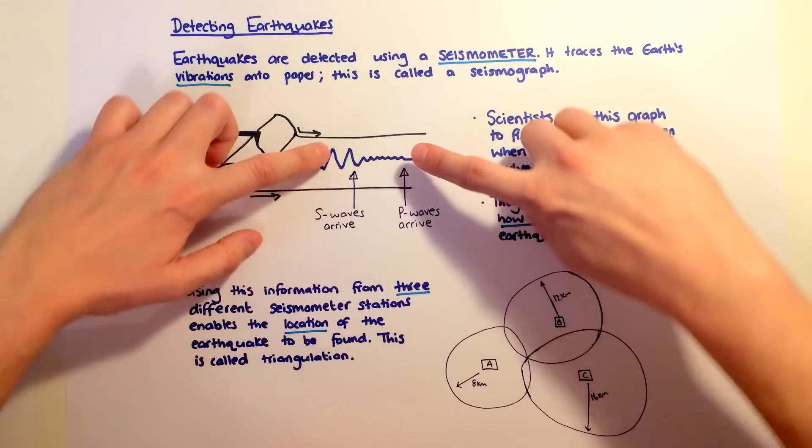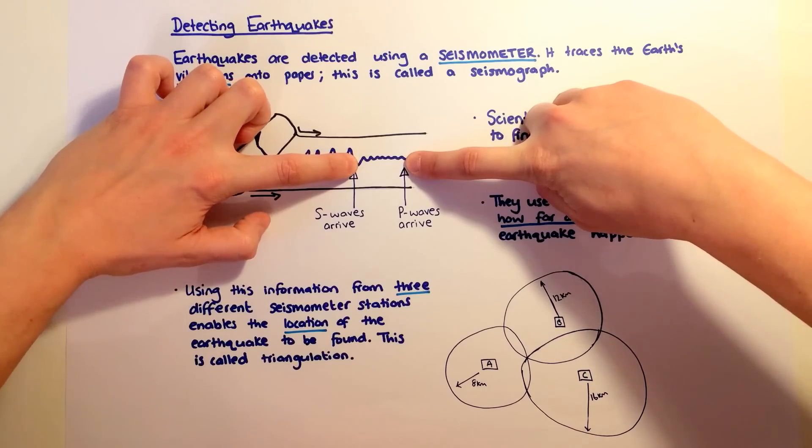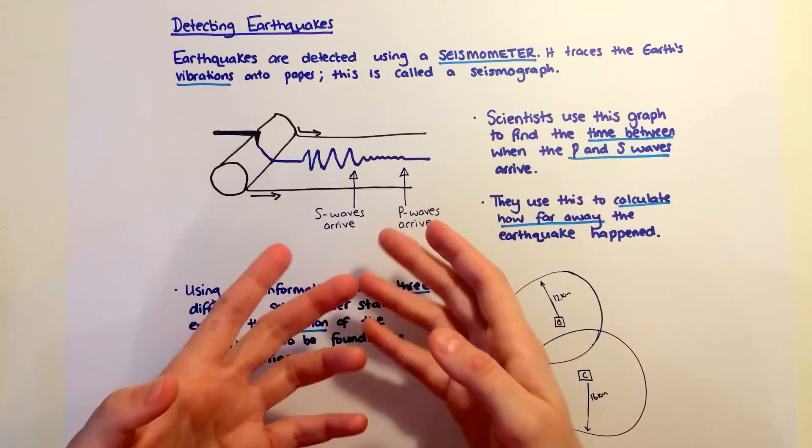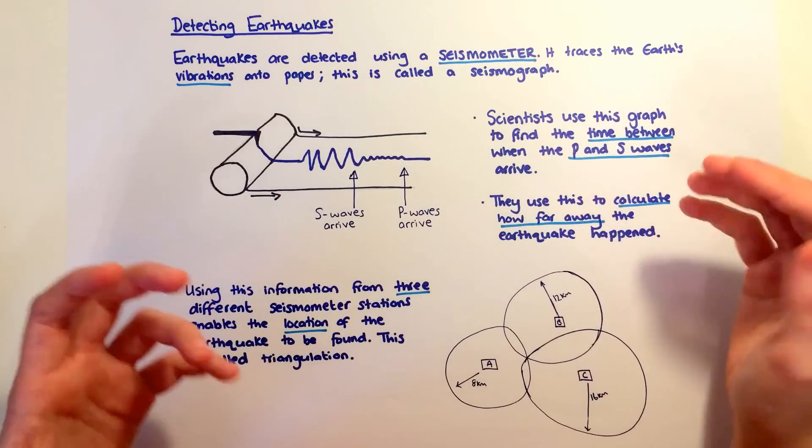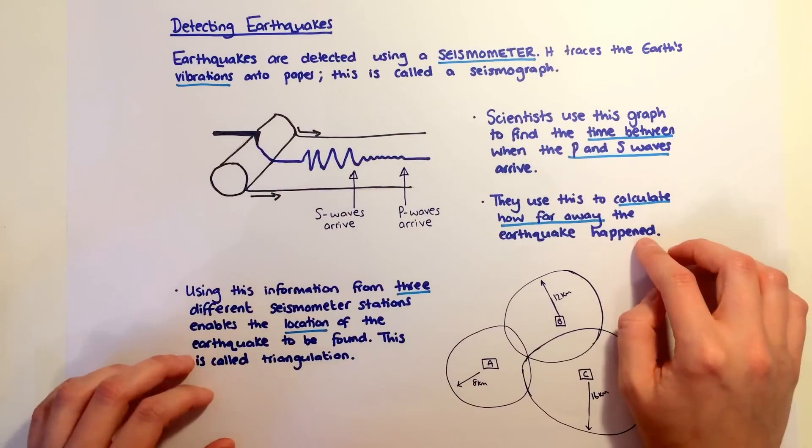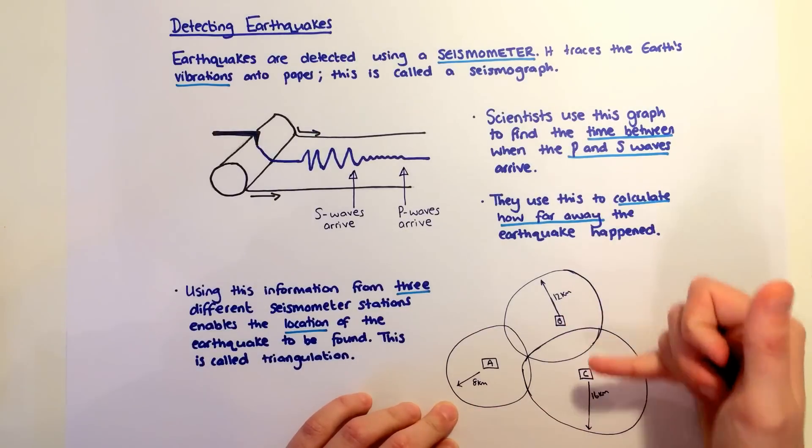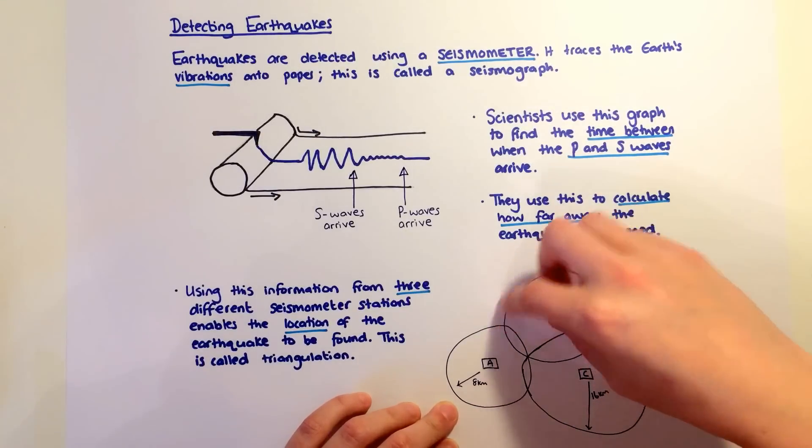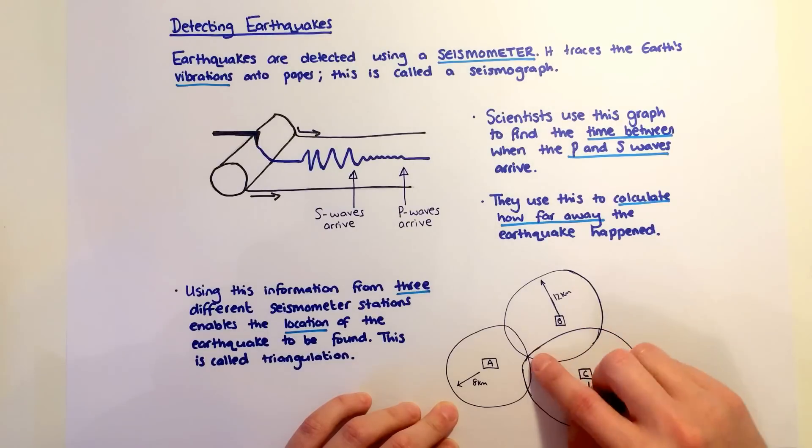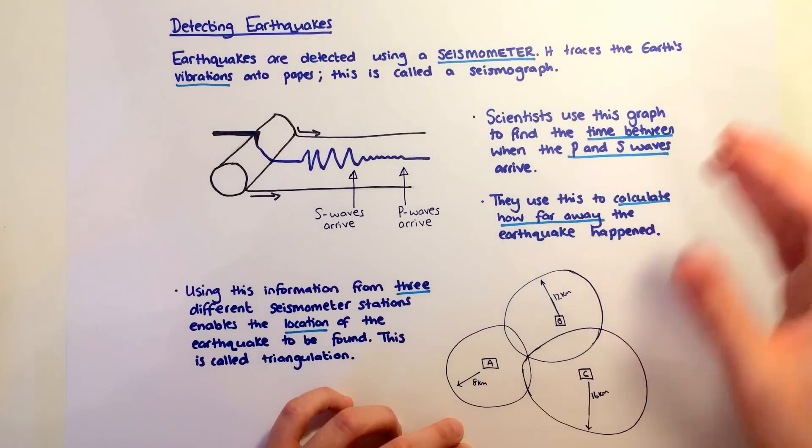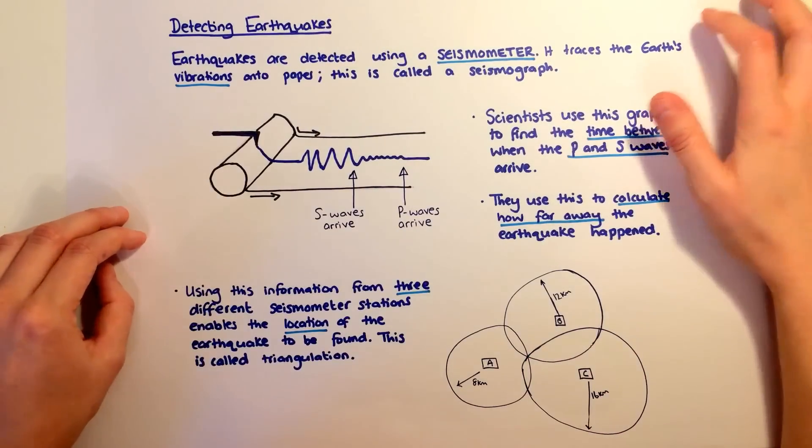Scientists are interested in the time between when the P waves arrive and when the S waves arrive, and they use that time to work out how far away the earthquake is. If I'm at station A and know the earthquake is 8 kilometres from me, it could be in any direction. I need to talk to my friends at stations B and C to find out how far away it was from their stations. The point where they all intersect is the location of where the earthquake happened.